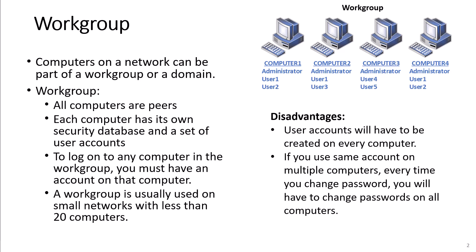Computers on the network can be part of a workgroup or a domain. With a workgroup, all computers are peers. Each computer has its own security database and a set of user accounts. To log on to any computer in the workgroup, you must have an account on that computer. A workgroup is usually used on small networks with less than 20 computers. A disadvantage of a workgroup is that every user account will have to be created on every computer, and if you use the same account on multiple computers, every time you change your password, you will have to change passwords on all computers one by one.